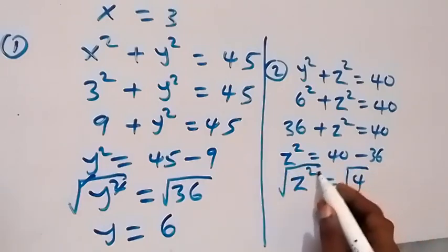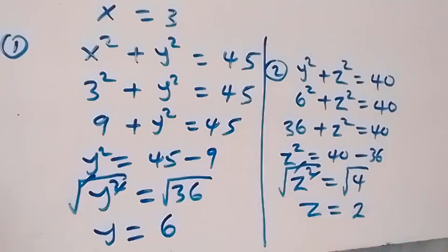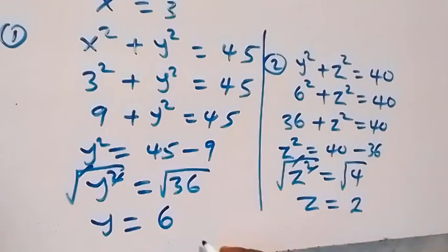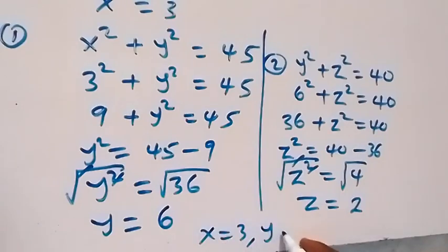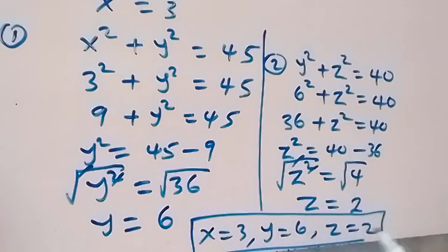Taking the square root of both sides, z equals 2, which is a positive integer. Hence we can conclude that x equals 3, y equals 6, and z equals 2. This is the solution of x, y, and z for this given problem.